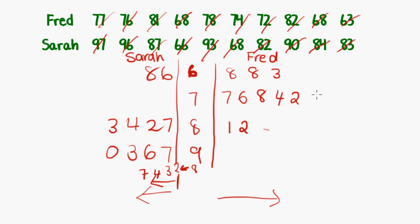And one last thing you should always add to a stem plot if you've been asked to draw one is a legend. So just something that says, you know, 7 bar 7 equals 77 or any of these numbers. So 6 bar 8 equals 68 just so that someone reading it can interpret your stem plot.